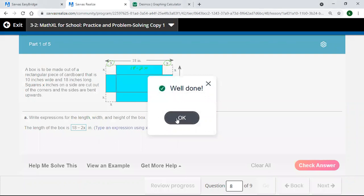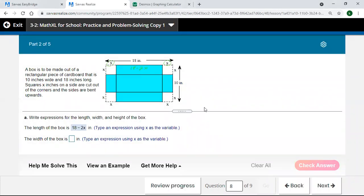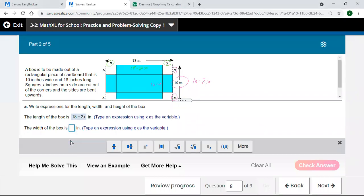Okay, then the next question, well what's the width? So the width is just going the other direction here. You've got your 10, but you're cutting off this x and this x, so then you got 10 minus 2x for going this way, for the width of the box.